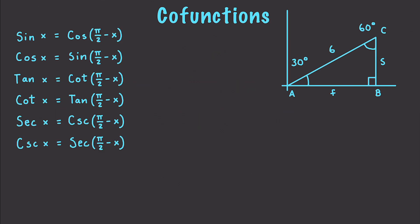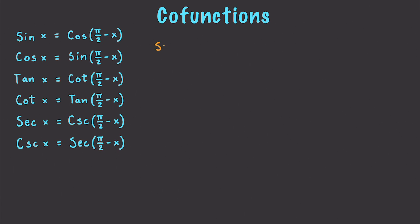Something important to know: all of the following are true. If you take an angle X and apply sine to it, that is equal to taking cosine of pi over 2 minus X. This part of the course focuses on simplifying trig expressions and verifying equality, and knowing this is extremely valuable. To verify: the sine of pi over 4, which is 45 degrees, equals approximately 0.707. And cosine of pi over 2 minus pi over 4 equals pi over 4, which also equals 0.707.